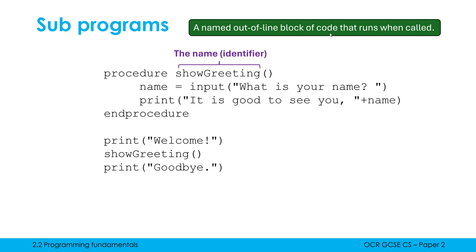The block of code which I'm referring to is shown here. In EOL we start with either 'procedure' or 'function' and then either 'end procedure' or 'end function'. In Python it's 'def' and then we just unindent to end it. This is our block of code — that is really the subprogram itself, and this initial block of code is often called the definition of the subprogram.